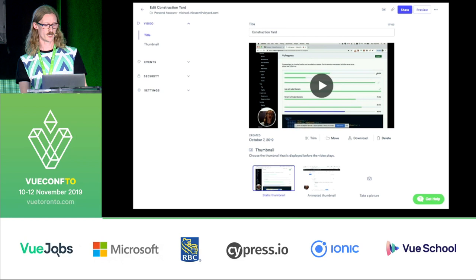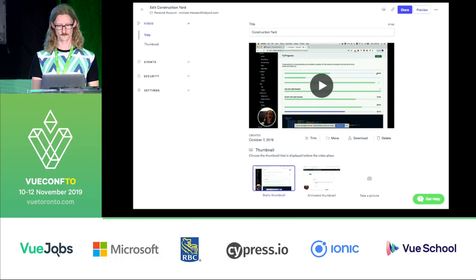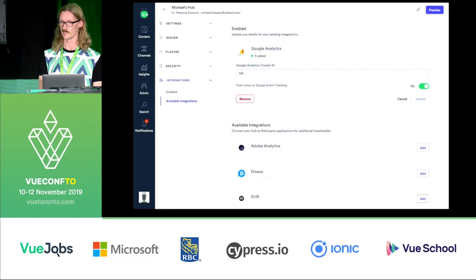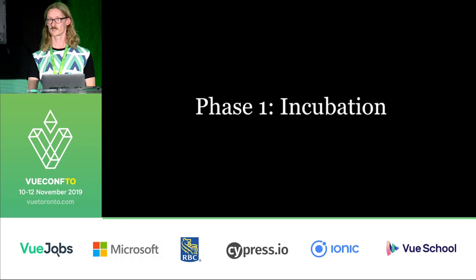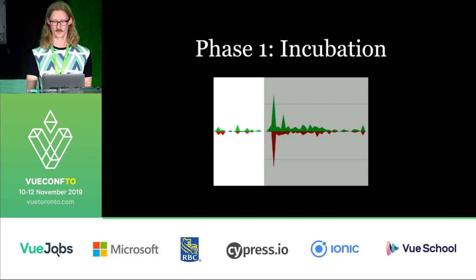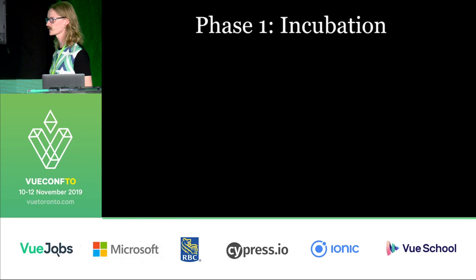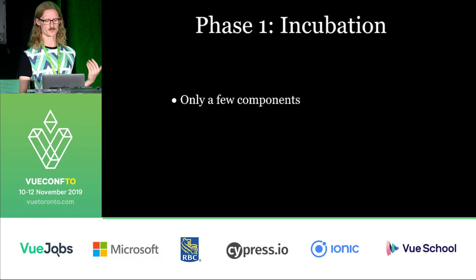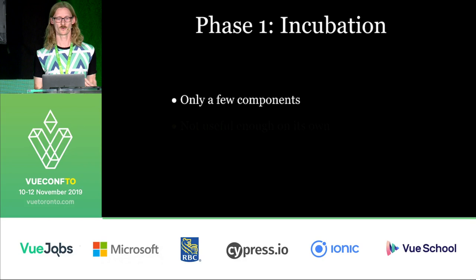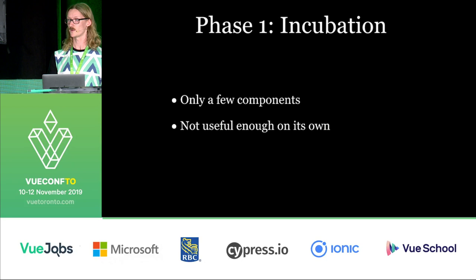That's a screenshot of one of our screens to see Construction Yard in a bit more context. So, the three different phases: the first one is Incubation. At the beginning we only had a few different components — maybe a button, maybe an input component. Because we only had a few components, it wasn't really all that useful, and we weren't able to build anything useful with this component library. We were building it alongside all of our regular feature work.